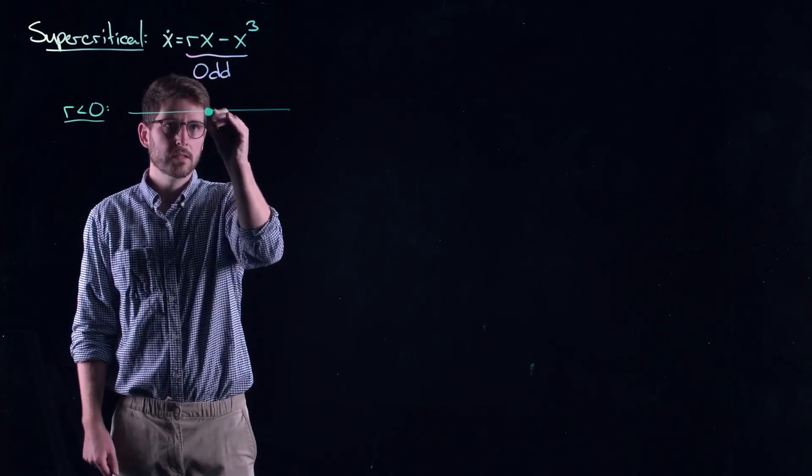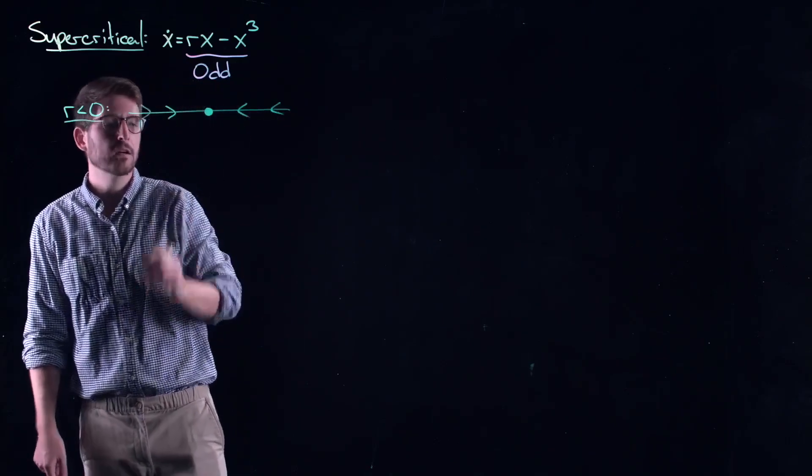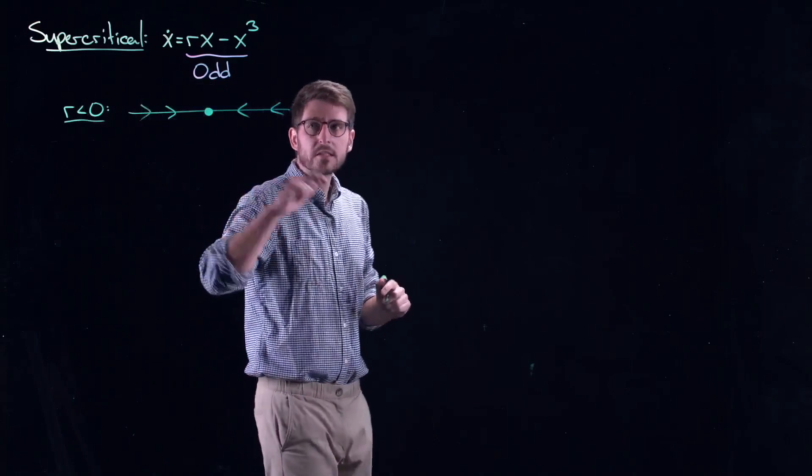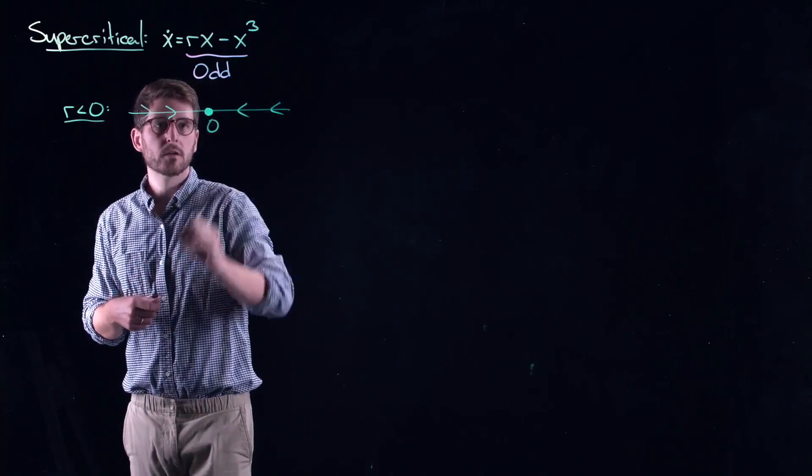So for r less than zero, there is only one fixed point of this thing and it's at zero. Let's do the phase line diagram. I'm going to skip a lot of the steps here because I think you're probably getting good at this by now. You have a stable fixed point at zero.